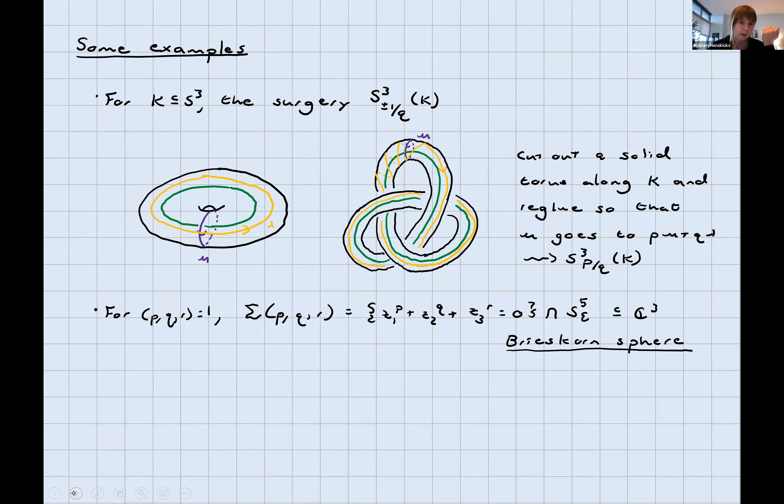Another example that's important to us is if I've got P, Q, and R coprime, I can look at the manifold sigma PQR, which is the intersection of the zero set of Z1 to the P plus Z2 to the Q plus Z3 to the R in C3, and a small sphere of radius epsilon around the origin. In real dimensions, C3 is six-dimensional. The zero set is four-dimensional, the sphere is five-dimensional. Nine minus six is three. You can check that's a homology sphere if P, Q, and R are coprime. This is called the Brieskorn sphere.